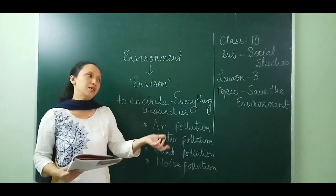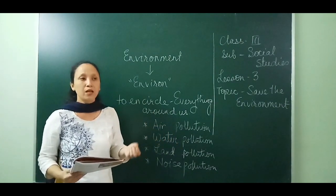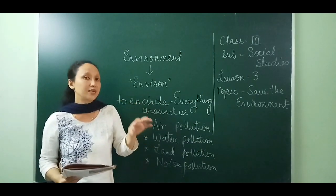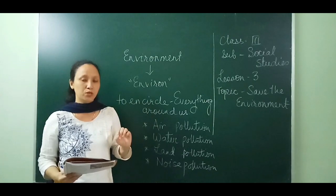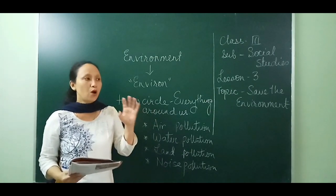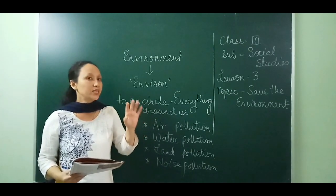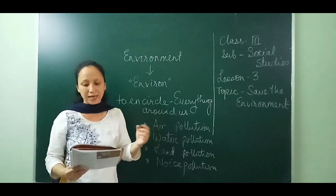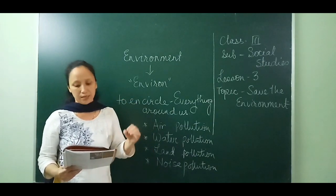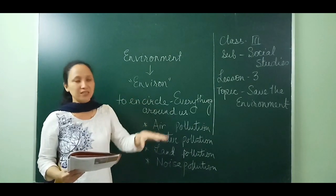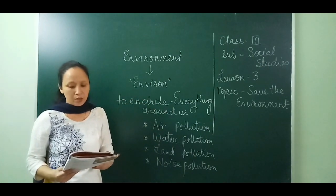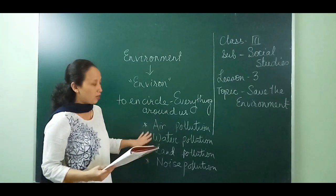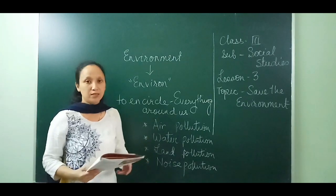Very carelessly we throw things into the environment. We must understand that there are some things which are degradable — they become decomposed. But there are some things which are not biodegradable. Those things, because they are not degrading, pollute the earth and make the place dirty. These are the different types of pollution we are going to read about as we advance into the chapter.